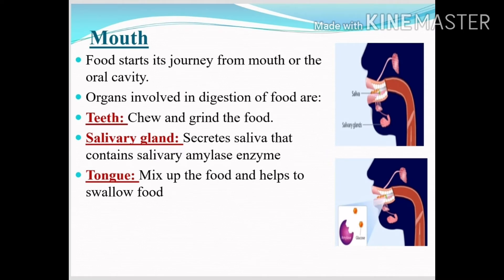First, we will start with the mouth, as food starts its journey from the mouth, or oral cavity, or buccal cavity. In the mouth, digestion of food involves teeth that help to chew and grind the food. Salivary glands secrete saliva that contains the salivary amylase enzyme, which helps to break down macromolecules into micromolecules. The third organ is the tongue, which helps to mix up and swallow the food.